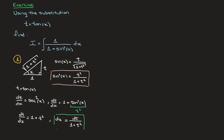Using these two expressions, we can rewrite our integral in terms of t. So I equals the integral of 1 over 1 plus sine squared of x — which is t squared over 1 plus t squared — times dx, which is dt over 1 plus t squared. That completes step one: we've successfully changed the variable and rewritten our integral in terms of t.